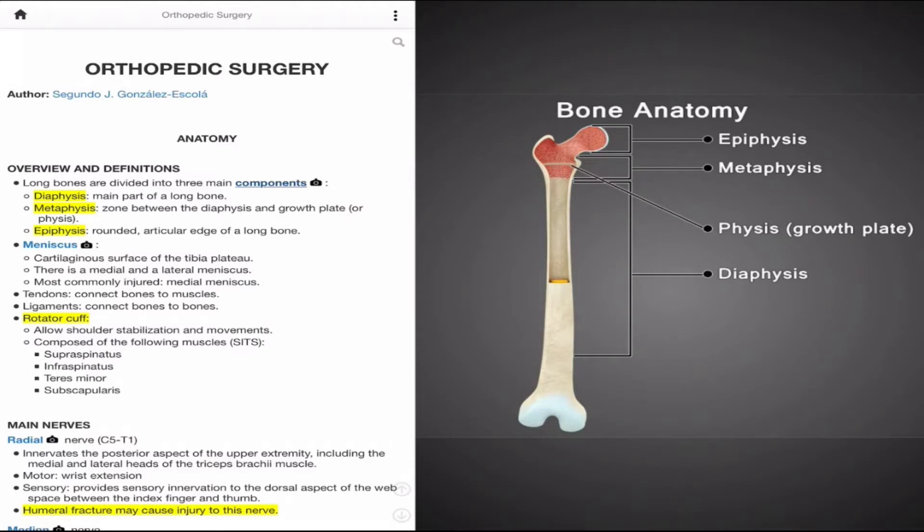We will first start with describing and defining important tissue structures. Let's begin with the long bones. In this example, we're looking at a femur. Long bones can be divided into three main components. The diaphysis, also known as the shaft, is the main section of the long bone. It is composed of cortical bone and typically will contain bone marrow and adipose tissue, or fat.